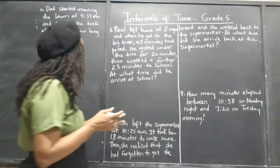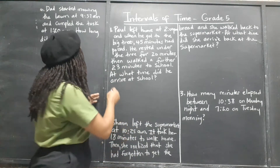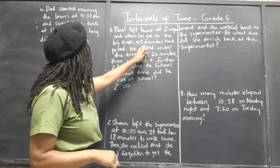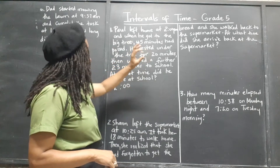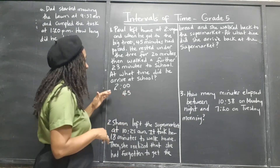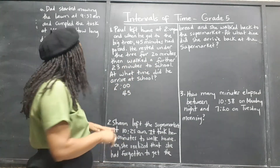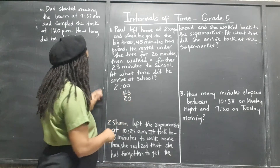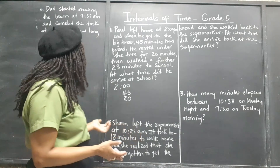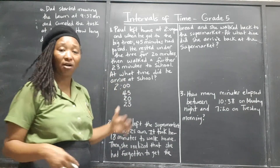He left home at 2 PM — I guess he's on the evening shift. That's 2 PM, and he walked for 45 minutes to the big tree. So we know we need to add that 45 minutes to when he started. He rested for 20 minutes — we also need to add that 20 minutes he rested for, because time is still going while he's resting. And then he walks for another 23 minutes.